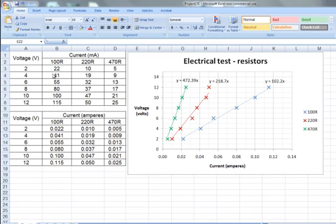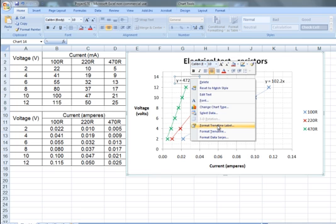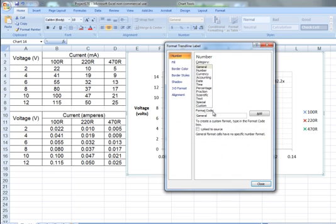Note that the measurement precision for the original data set is generally limited to two significant figures. So what that means in terms of the numbers we've calculated for the gradient of each of these lines, the decimal places after the decimal point are superfluous.